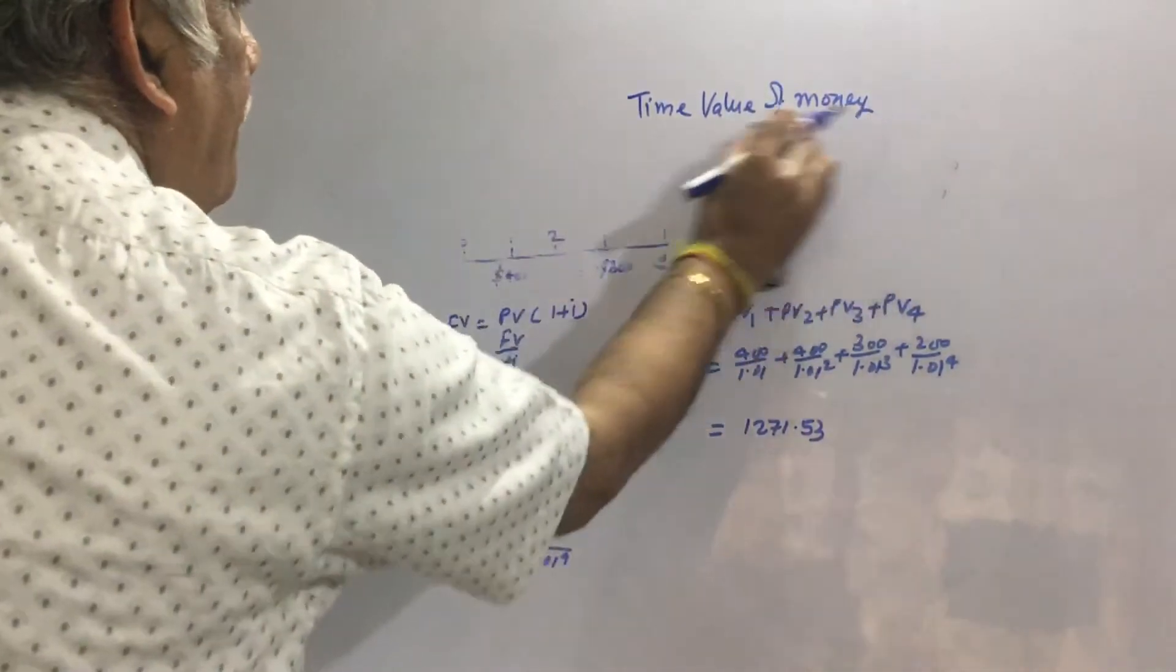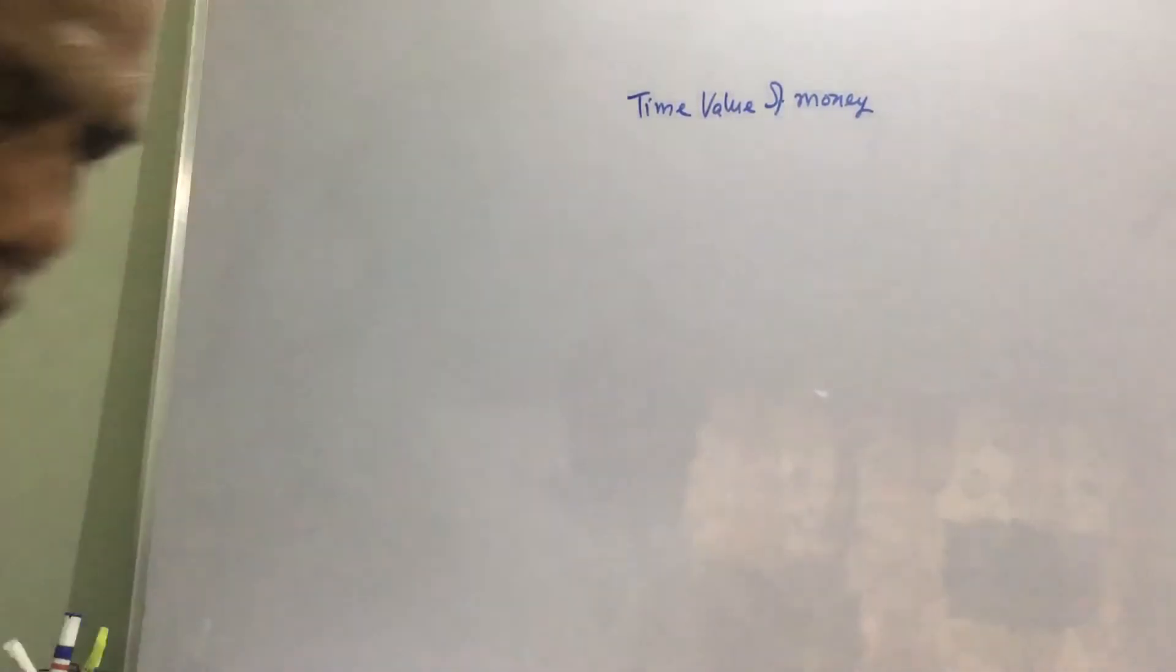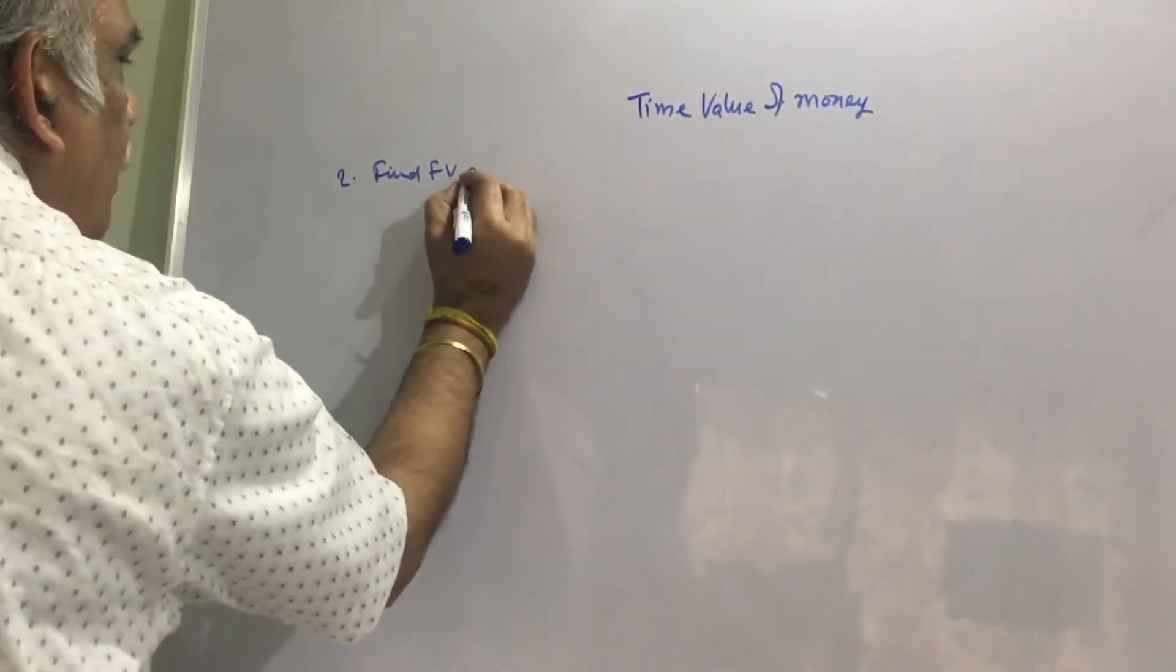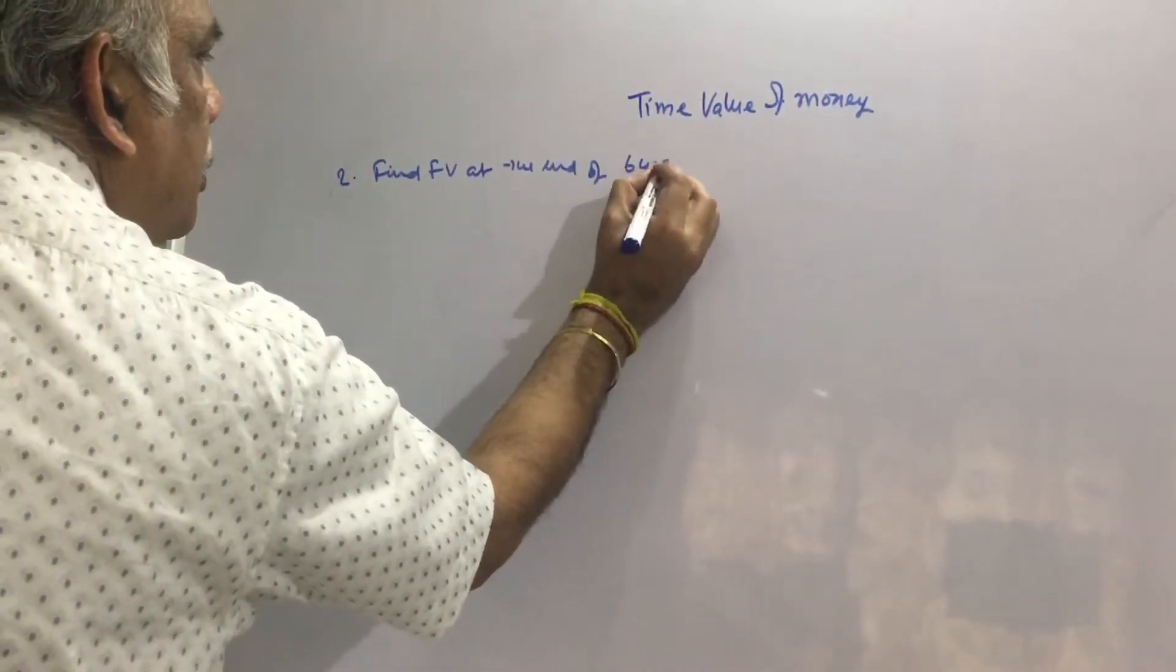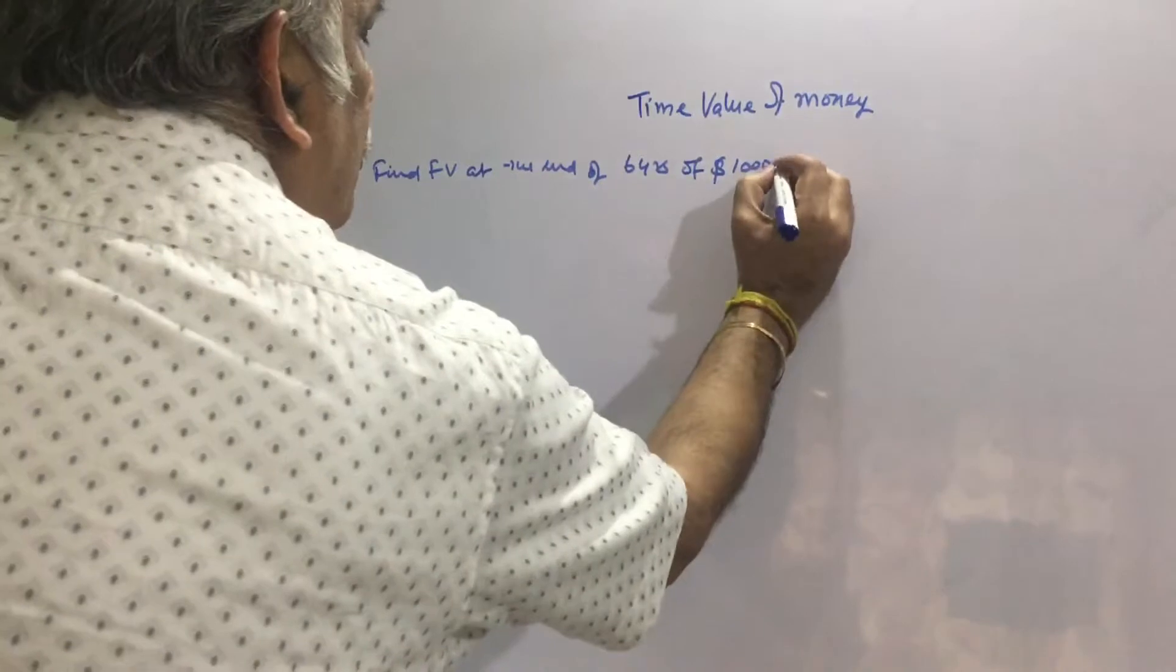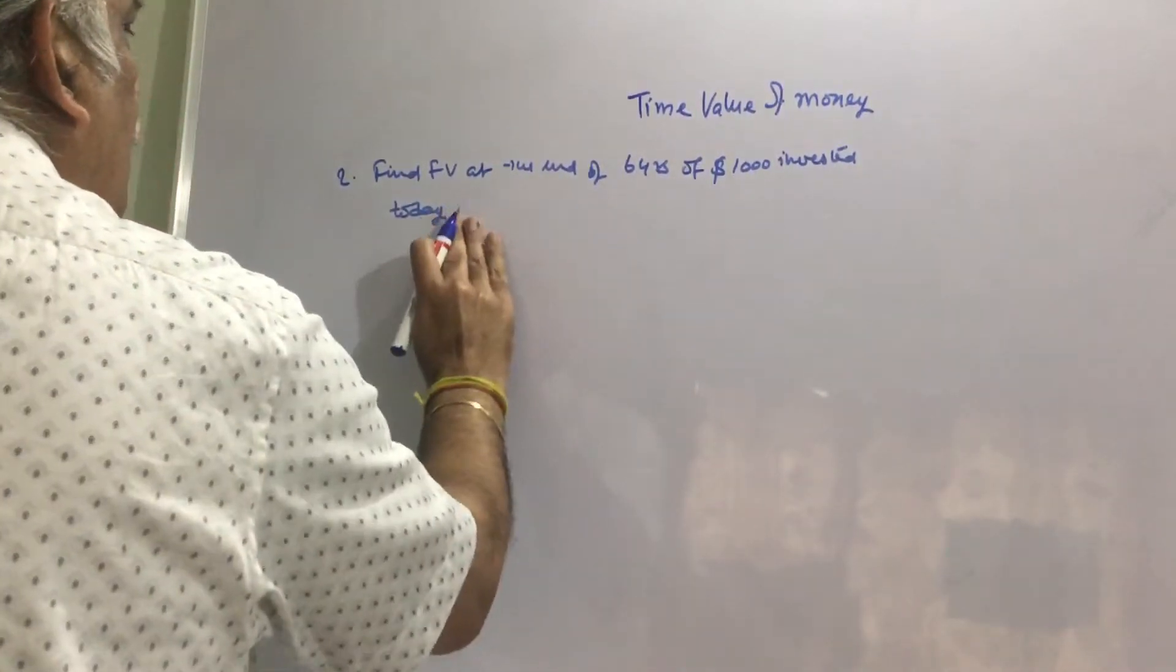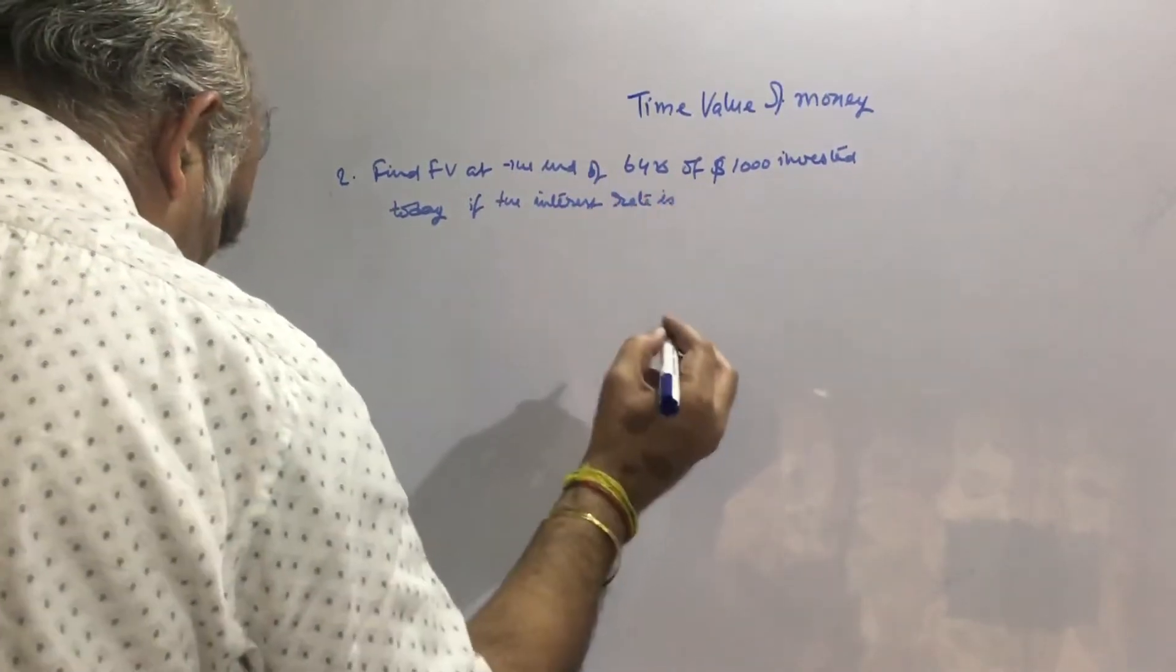Let us see another problem. Second problem: Find the future value of $1,000 invested today for 6 years if interest rate is 11%.